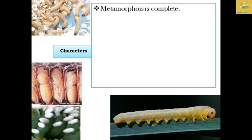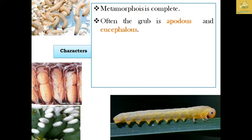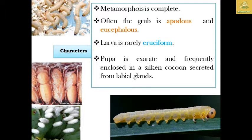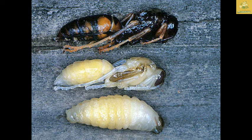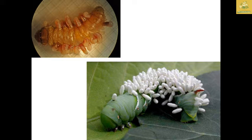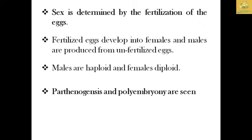The metamorphosis is complete in this group of insects — egg, larva, pupa, and adult. They often have a grub or apodous larva. The larva is largely eruciform and the pupa is an exarate pupa, frequently enclosed in a silk cocoon secreted by the labial glands. Sex is determined by fertilization of eggs. Fertilized eggs develop into females, and males are produced from unfertilized eggs — males are haploid and females are diploid. Parthenogenesis and polyembryony are also seen in this order.